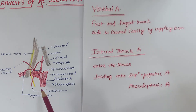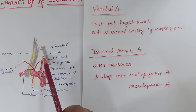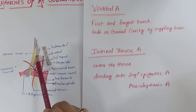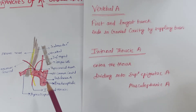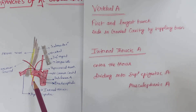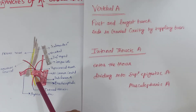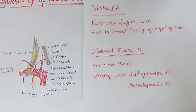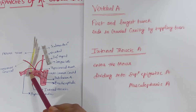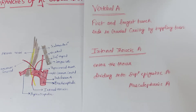In this diagram we can see the subclavian artery, vertebral artery, scalenus anterior, longus colli, thyrocervical trunk, and internal thoracic artery. The internal thoracic artery arises from the inferior aspect of the first part of the subclavian artery, opposite the origin of the thyrocervical trunk. Its origin lies near the medial border of scalenus anterior. The artery runs downward and medially in front of the cervical pleura, passes behind the first costal cartilage, runs to the sixth intercostal space, and ends by dividing into the superior epigastric and musculophrenic arteries.